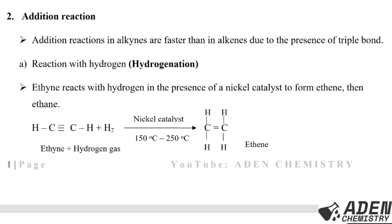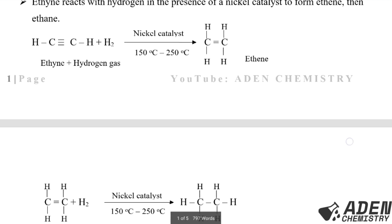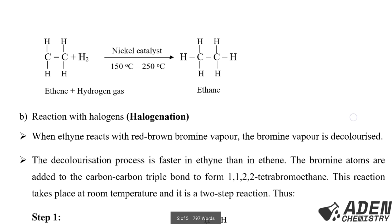Step one: ethyne reacts with hydrogen gas in the presence of a nickel catalyst at a temperature of 150°C to 250°C to form ethene gas. Step two: ethene gas reacts with hydrogen gas in the presence of a nickel catalyst at 150°C to 250°C to form ethane gas.